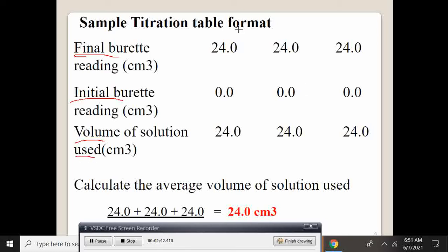So, for instance, if the final was 24 and the initial was zero, when you compute the two volume by subtracting, the volume used, you find that it is 24.0 cubic centimeters.